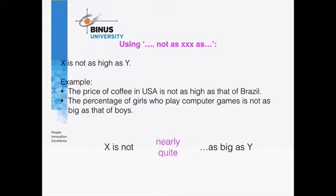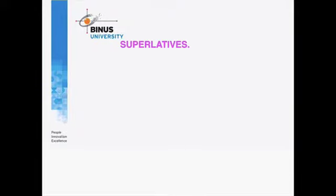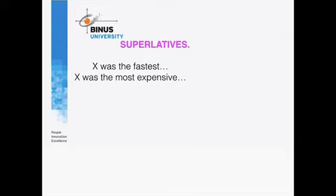So we've looked at the standard comparison structure and how to use 'as'. The other thing we need to look at is superlatives. Previously we were comparing X with Y. With superlatives we're going to describe one thing relative to a group of others. For example: X was the fastest, or X was the most expensive of all the categories. With superlatives you'll use the suffix '-est' or you'll use 'most' with the adjective.